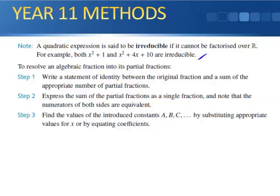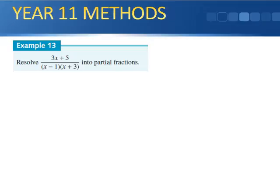That's what an irreducible fraction means. Now going straight into Example 13: resolve (3x + 5) divided by (x - 1)(x + 3) into partial fractions. We let (3x + 5) / [(x - 1)(x + 3)] equal A/(x - 1) + B/(x + 3). Getting the right-hand side over one denominator gives us A(x + 3) + B(x - 1).